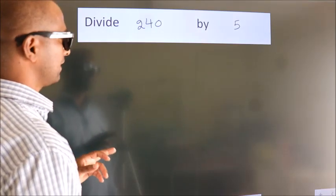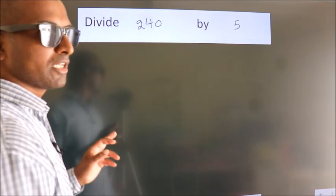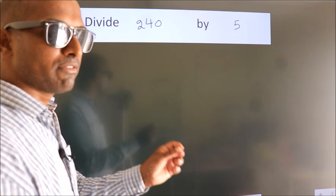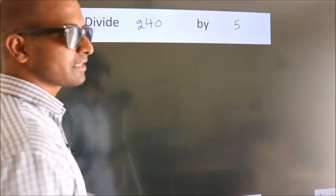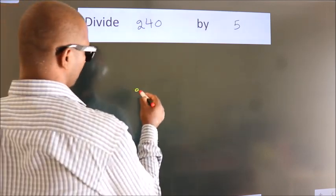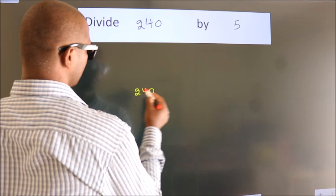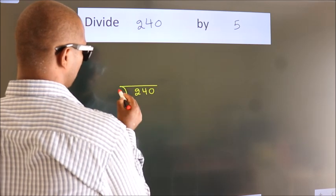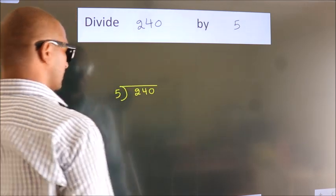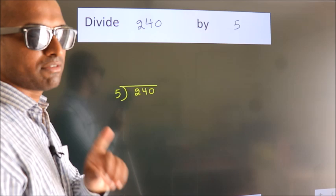Divide 240 by 5. To do this division, we should frame it in this way. 240 here, 5 here. This is your step 1.